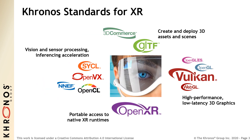Here are some of the Khronos open standards that are most relevant to augmented and virtual reality. On the right are 3D rendering APIs including Vulkan, OpenGL and WebGL. On the top are 3D asset formats including GLTF for real-time transmission of 3D scenes and object models, which is often used in AR and VR applications. On the left are APIs and languages for parallel computation including vision processing and inferencing, and last but not least is the OpenXR API standard for portable access to augmented and virtual reality devices.